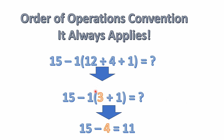12 divided by 4 is 3. As you can see in the graphic, 12 divided by 4 equals 3. So inside the parentheses we're now left with 3 plus 1, which is pretty easy — that's 4.